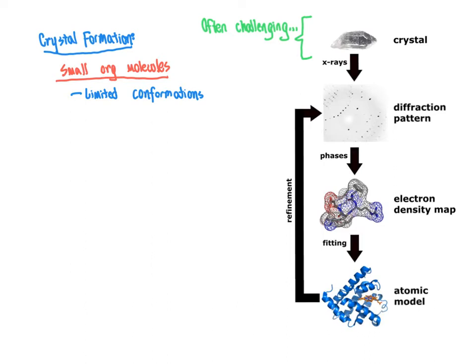Additionally, there's no concern about denaturation — there aren't extensive networks of hydrogen bonds that can break to disrupt crystal formation, unlike with macromolecules where denaturation can be a huge problem. As a result, there are many methods for crystallizing small molecules, and it's generally necessary to empirically determine what works for your particular compound. One practical approach is to consult the literature for a structure most similar to yours — a compound with similar functional groups may be expected to crystallize using similar methods.